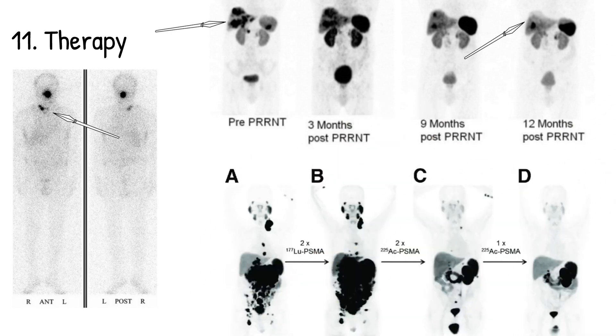We've also developed newer tracers that are alpha emitters as well as the original beta emitters. And here you can actually see PSMA in prostate cancer improve the outcomes using actinium-225 over lutetium-177.